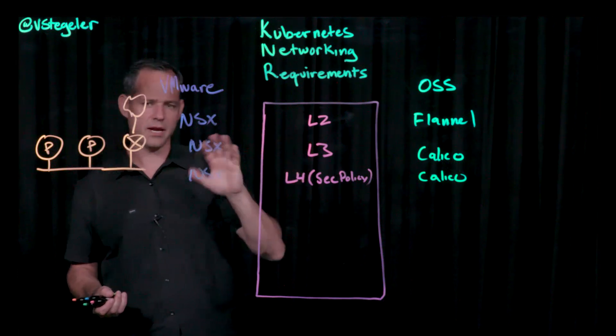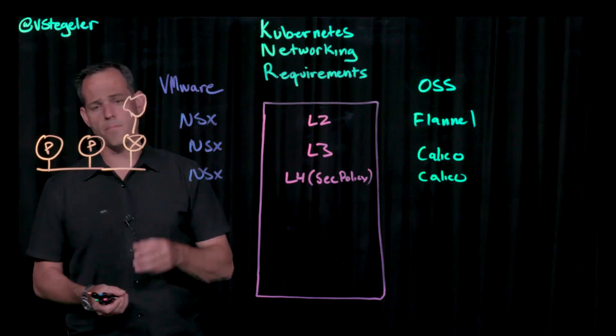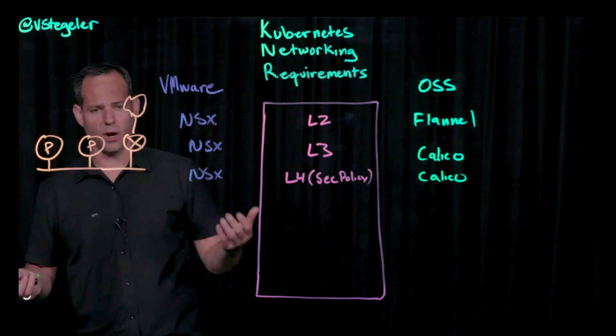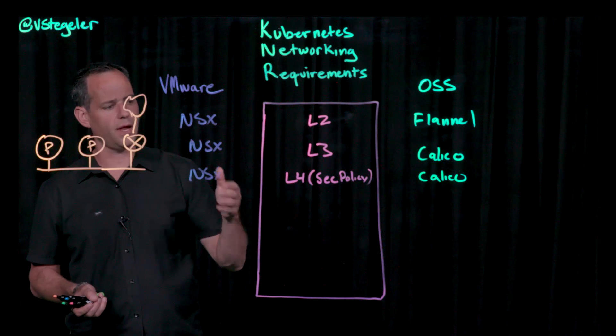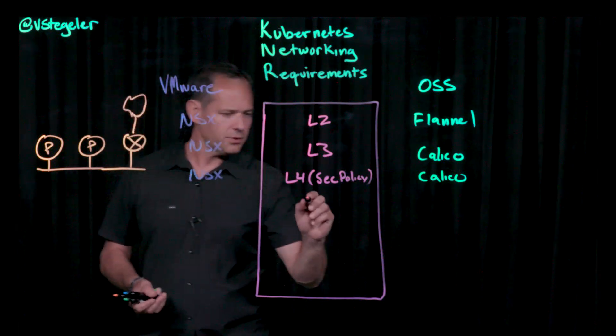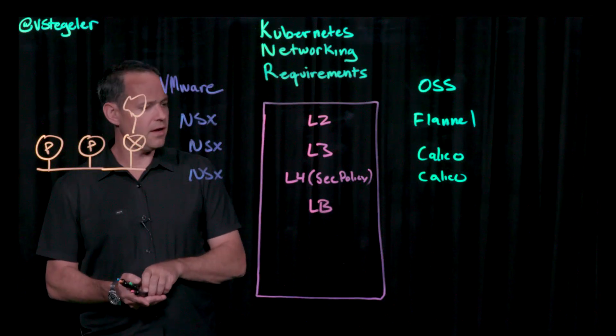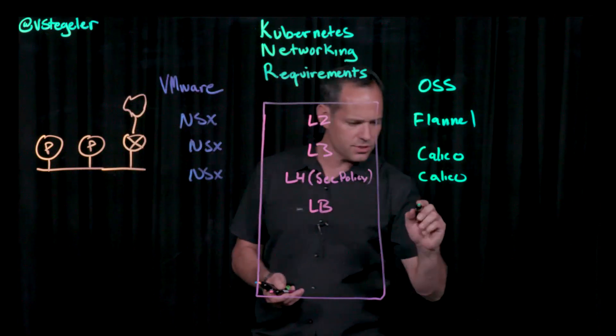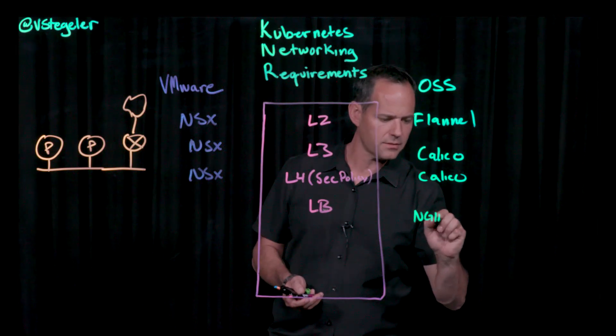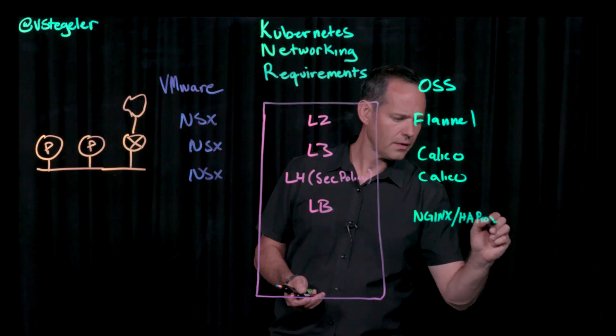Beyond that, though, most cloud native applications require some sort of a load balancer. And again, Kubernetes gives you a great construct to be able to define load balancers here. And so in this case, we've got our load balancer here. And the technology over here on the open source side is going to be something like Nginx. Or maybe like HAProxy.